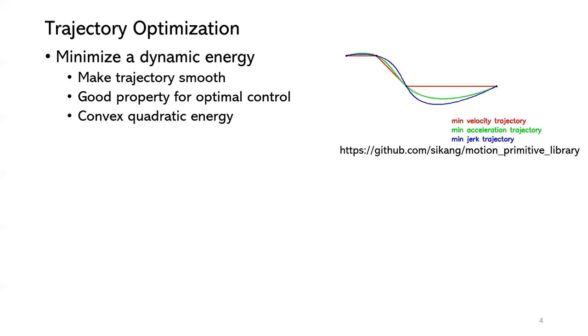We are focusing on trajectory optimization, which has two parts. The first part is to minimize the dynamic energy. The dynamic energy can be jerk or snap energy. It can make the trajectory smooth, as the figure shows, and it's a good property for optimal control. A dynamic energy is always a convex quadratic energy, so it's easy to handle.